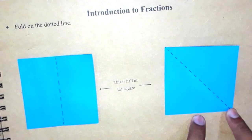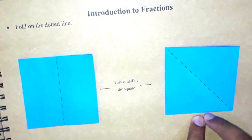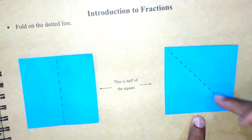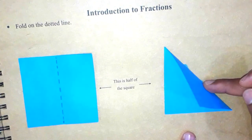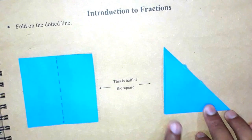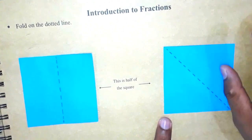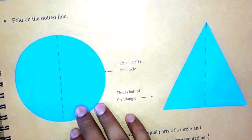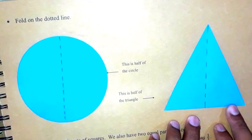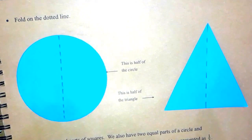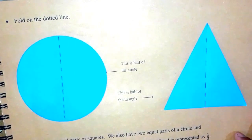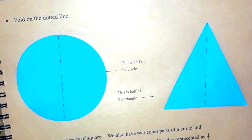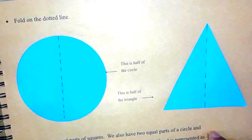Now let's move on to this figure. In this figure, the same square is there but the dotted line is drawn in a different direction. Now just fold on the dotted line and you will see this figure appear. This is exactly half of this figure. Now here you will see a circle and this is a triangle. We have two equal parts of a square, and we also have two equal parts of a circle and a triangle.